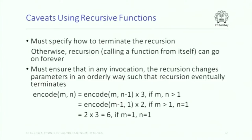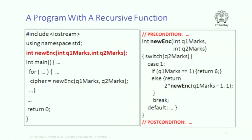The encode function is defined as: encode(m, n) = encode(m, n-1) × 3 if m and n > 1; encode(m-1, 1) × 2 if m > 1 and n = 1; and 6 if both are 1. In the implementation, if q1 marks equals 1 and q2 marks equals 1, return 6 (which is 3 × 2). Otherwise, call recursively. You must ensure parameters change in an orderly way so that the recursion eventually terminates.